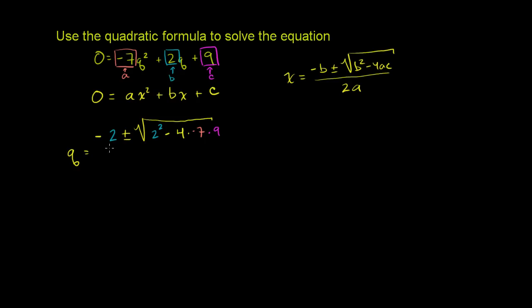And all of that over 2a. All of that over 2 times a, which is negative 7.